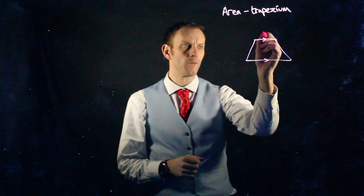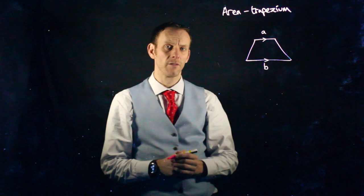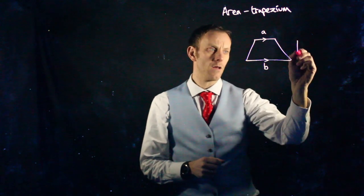When we're finding the area of a trapezium, we frequently refer to A and B, which are your parallel sides, and the height.